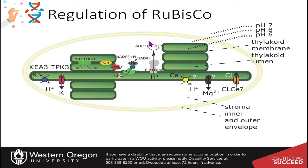These two cycles are also connected by these energy resources being utilized in the Calvin cycle. If you're not having the light reactions active, you're going to slow the production of ATP and NADPH, and eventually the Calvin cycle won't be able to run.